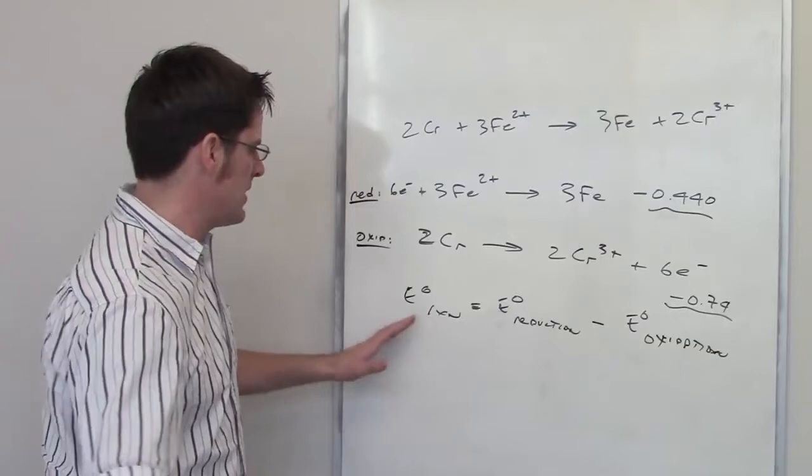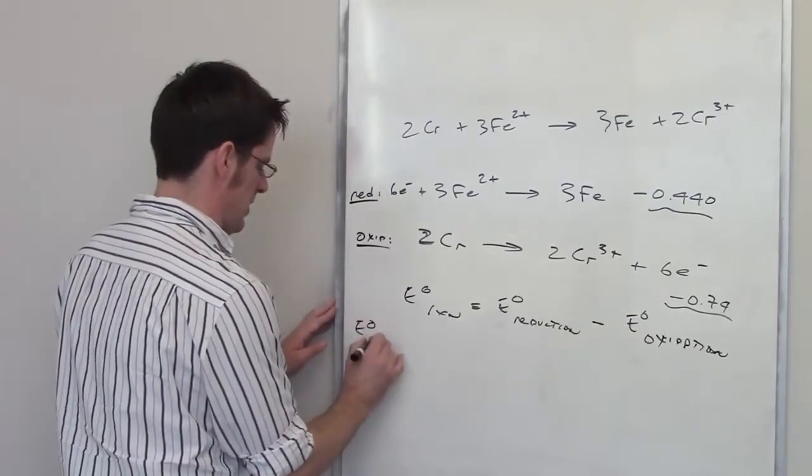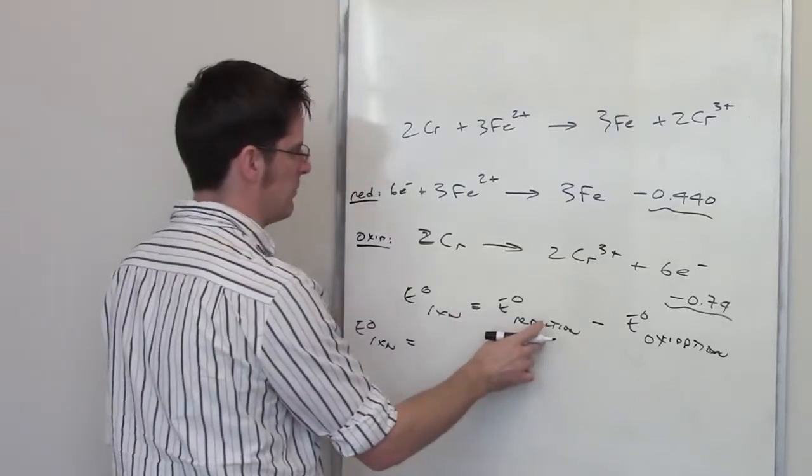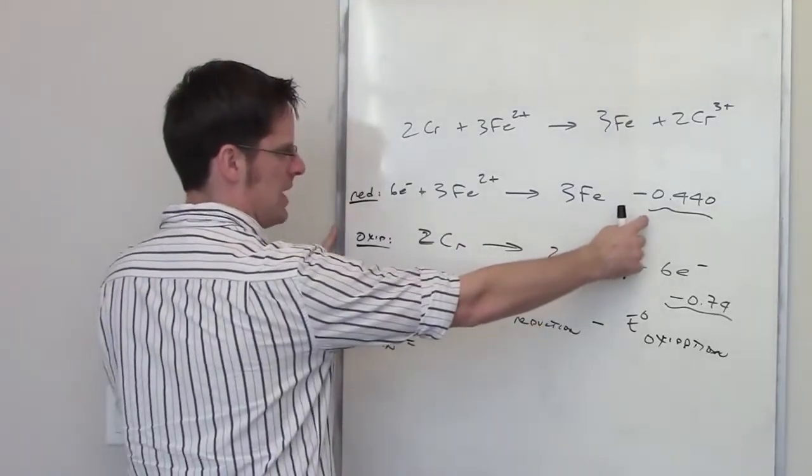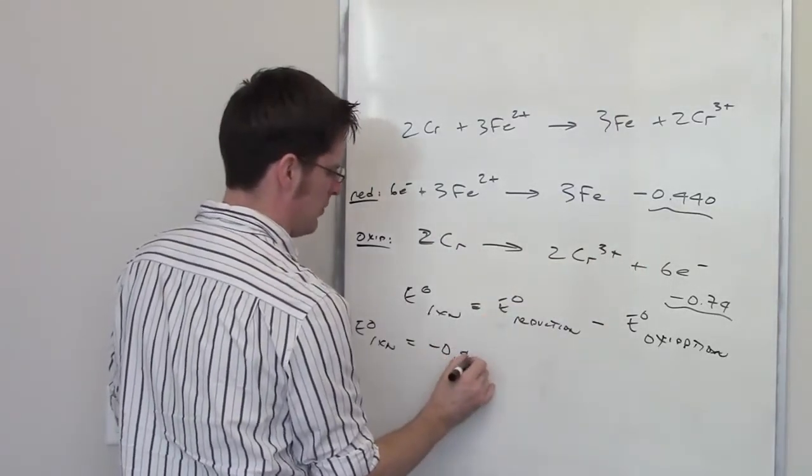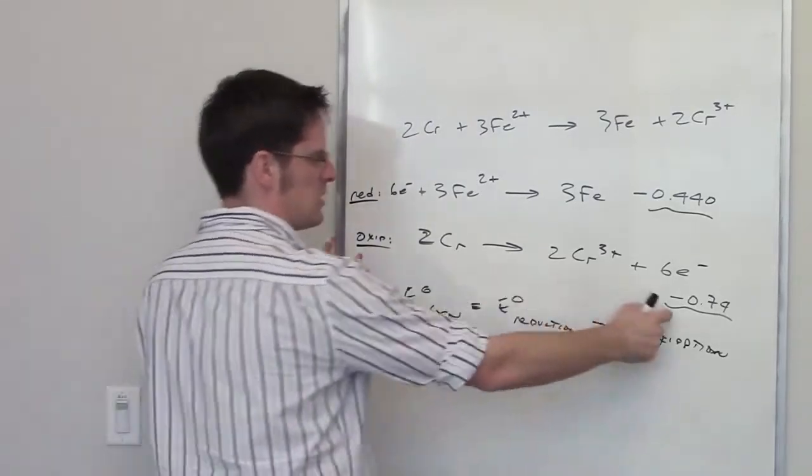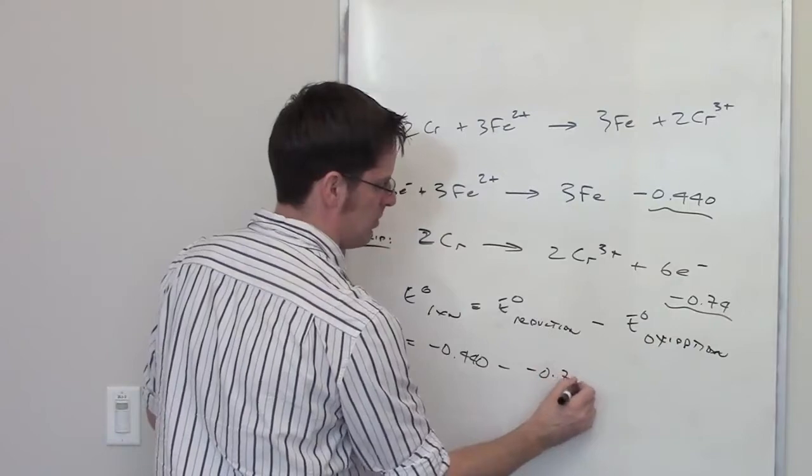So now let's see if we can find the overall electron potential here for the reaction. I have to take the number for the reduction. The reduction is the one up top. That's going to be negative 0.440. I have to subtract from it that for the oxidation. The oxidation is a negative 0.74.